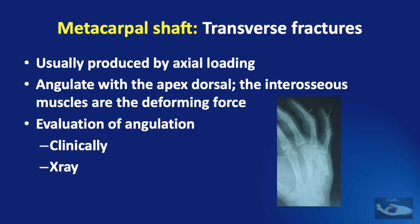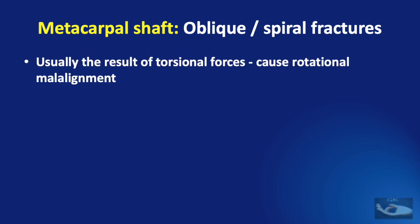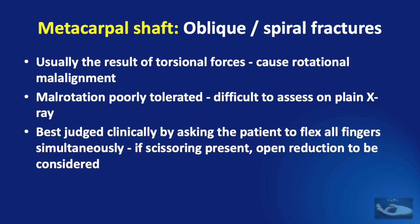The evaluation of angulation can be done both clinically and more accurately on x-ray. Oblique and spiral fractures are usually the result of torsional forces which cause rotational malalignment, and this malrotation is poorly tolerated. It is difficult to assess on plain x-rays. It can be judged clinically by asking the patient to flex all the fingers simultaneously — if there is malrotation, there will be scissoring of the fingers or crossing of one finger over the other. If this occurs, open reduction should be considered.